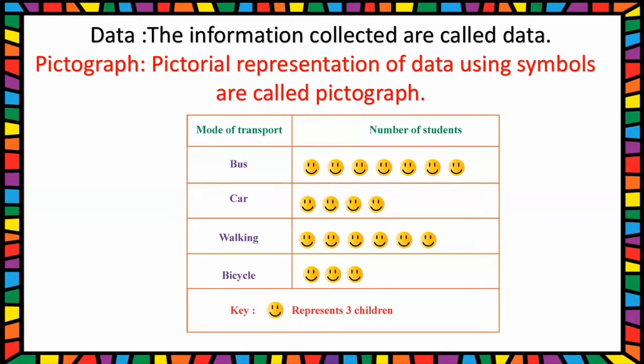Walking has six smileys, so six times three, eighteen are walking. Next bicycle has three smileys, so nine children are using bicycle. So this way we can represent data using pictograph.